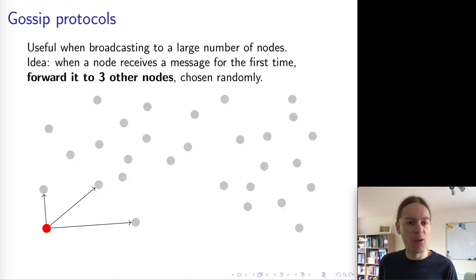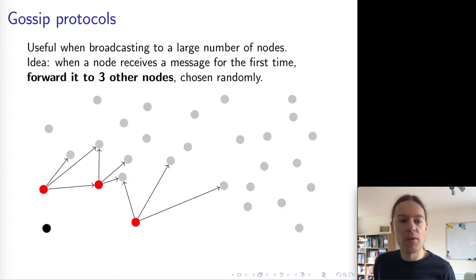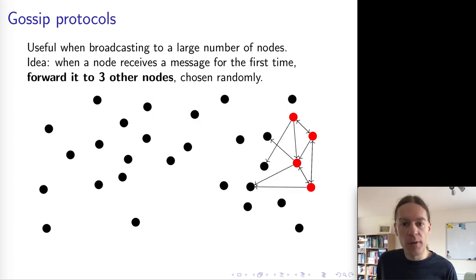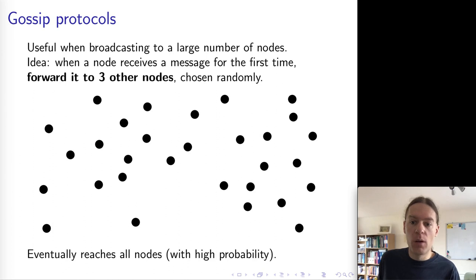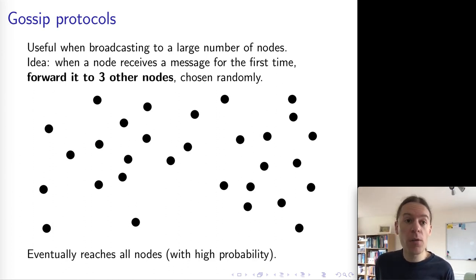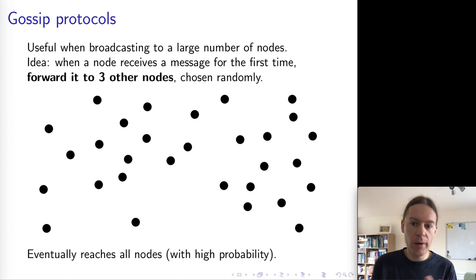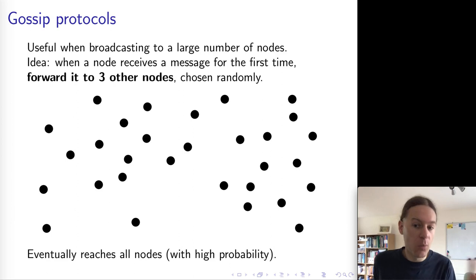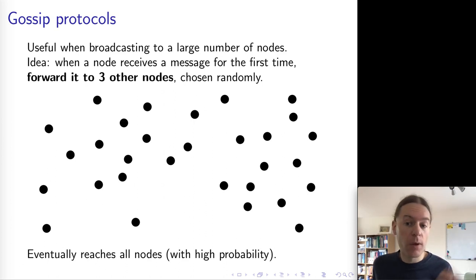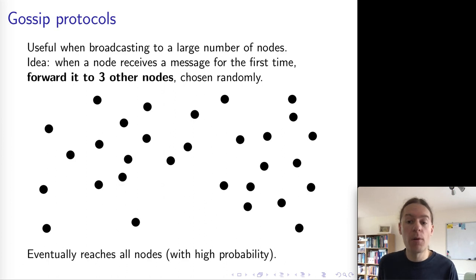Let me just go through that animation again because it's so beautiful. So we have the message spreading here, and in this case, all 30 nodes in this example have received the message after about six rounds of communication. There are lots of details you can tune about gossip protocols — about how exactly they decide when to send messages and when to stop. But the basic principle is that they are a way of achieving reliable broadcast, and they are quite robust so that even if some nodes crash or some messages get lost, we still have very high probability that all messages get through to all nodes.